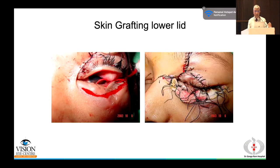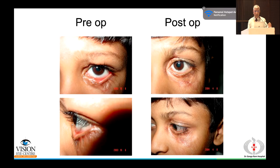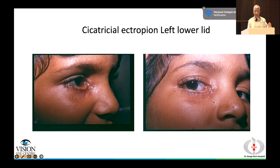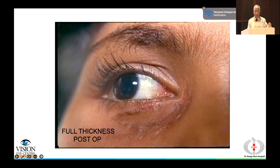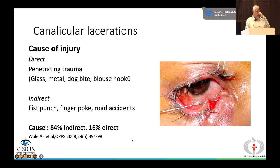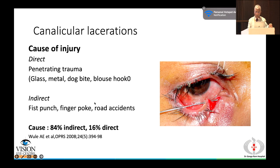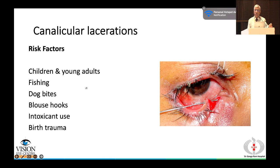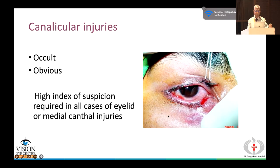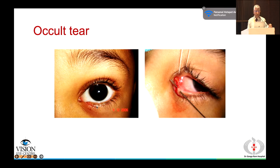V-to-Y plasty for the upper lid combined with skin grafting for the lower lid corrects severe ectropion by replacing skin tissue. Full-thickness skin grafts may be needed. Canalicular injuries occur due to direct penetrating trauma or indirect trauma from violence or road accidents; children, young adults, and infants with blouse-hook injuries are most commonly involved, along with birth trauma. Occult injuries must be suspected to prevent persistent epiphora and abnormal canthal appearance.